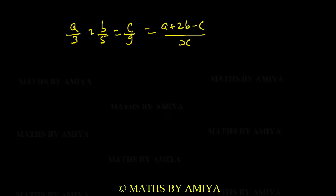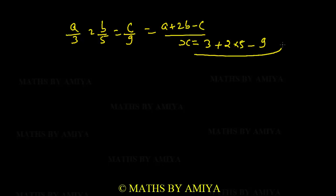Your time starts now. According to our concept, if we have a+2b-c in the numerator, we do the same in the denominator: 3 + 2×5 - 9 = 3 + 10 - 9 = 4. So x = 4.